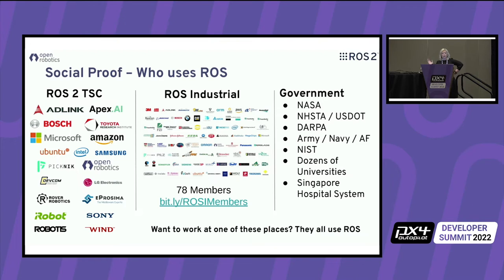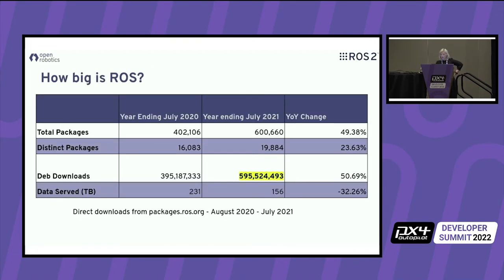Social proof: a lot of times people say ROS is just a little tiny open source project that no one uses. Turns out it's been 10 years since that was the case. We have a sizable ROS 2 technical steering committee, the ROS Industrial membership is huge with lots of Fortune 50 companies. We've talked to NASA, US Department of Transportation, DARPA, all branches of the military, NIST, universities, and a Singaporean hospital system. Last year, 600 million binaries were served — it's a non-trivial project.